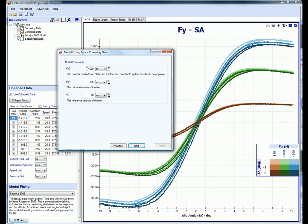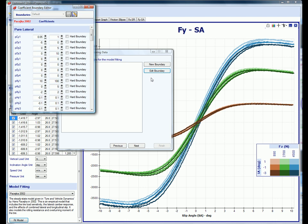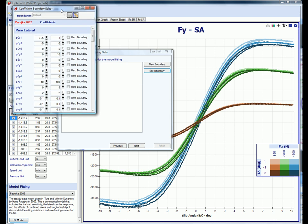There are a few user-specified coefficients in some of the models. In this case, we'll enter the nominal load for this tire as 4,500 newtons. Now we choose boundaries for each of the coefficients. In most cases, the default boundaries work quite well. We have the option of modifying them if needed.